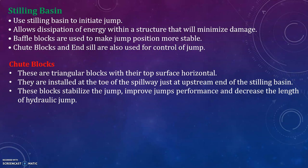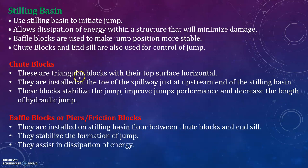Chute blocks are triangular blocks with their top surface horizontal. They are installed at the toe of the spillway, just at the upstream end of the stilling basin. These blocks stabilize the jump, improve the jump's performance, and decrease the length of the hydraulic jump.